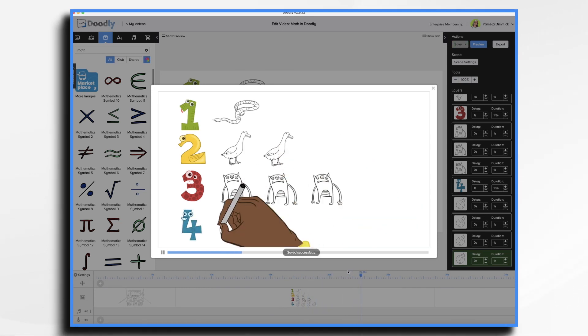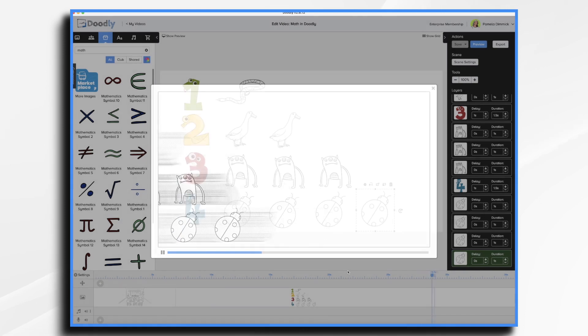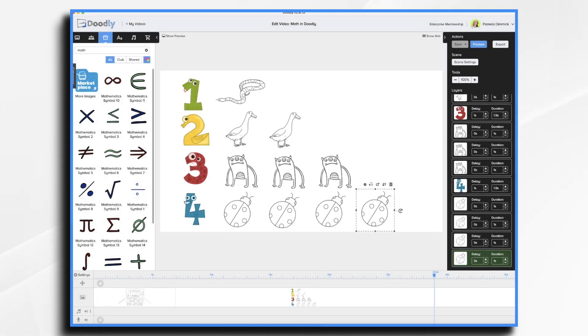I imported these fun numbers from pixabay.com and then use some standard and enterprise graphics for the items. I believe I imported this monster a while back. That's the beauty of Doodly. You can import virtually any type of graphic you need including numbers, symbols, charts, and shapes. All of which are used in math.